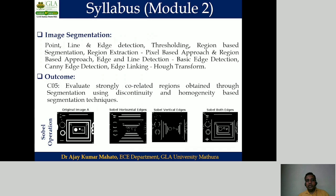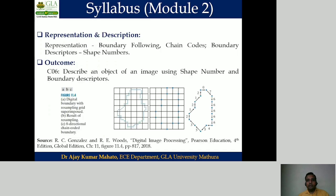The next topic is image segmentation. In it, we learn how to detect the presence of an isolated point, line, or edge in a given digital input image. We will also learn various thresholding approaches. The last topic of this curriculum is image representation and description, in which we learn about chain codes.